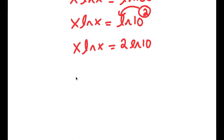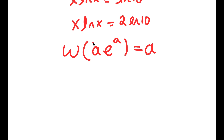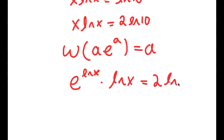There's something called the W Lambert function. If I take the W Lambert function of something in the form a times e to the power of a, this is going to equal a. So what I'm going to do is rewrite x as e to the power of ln x, because e and ln cancel out, resulting in simply x. So I rewrite x as e to the power of ln x, and I have this times ln x is equal to 2 times ln 10, which is now in the form a times e to the power of a.